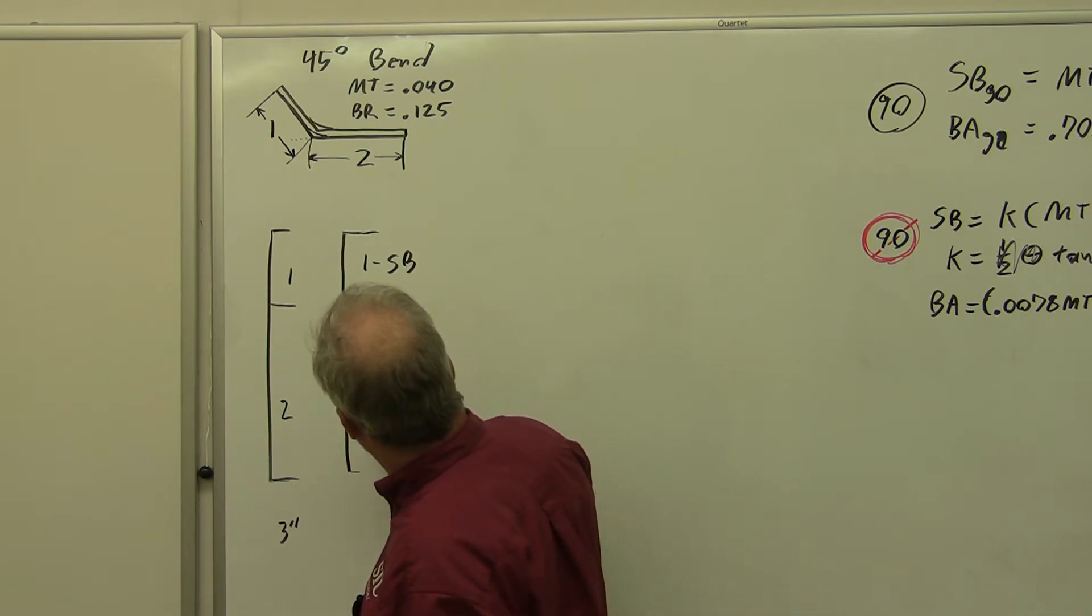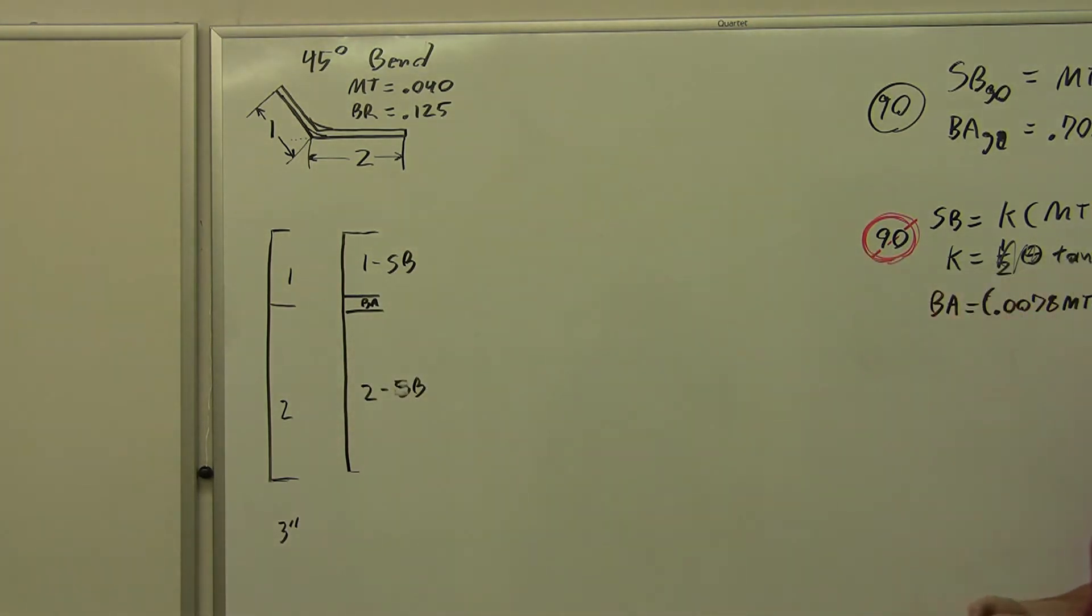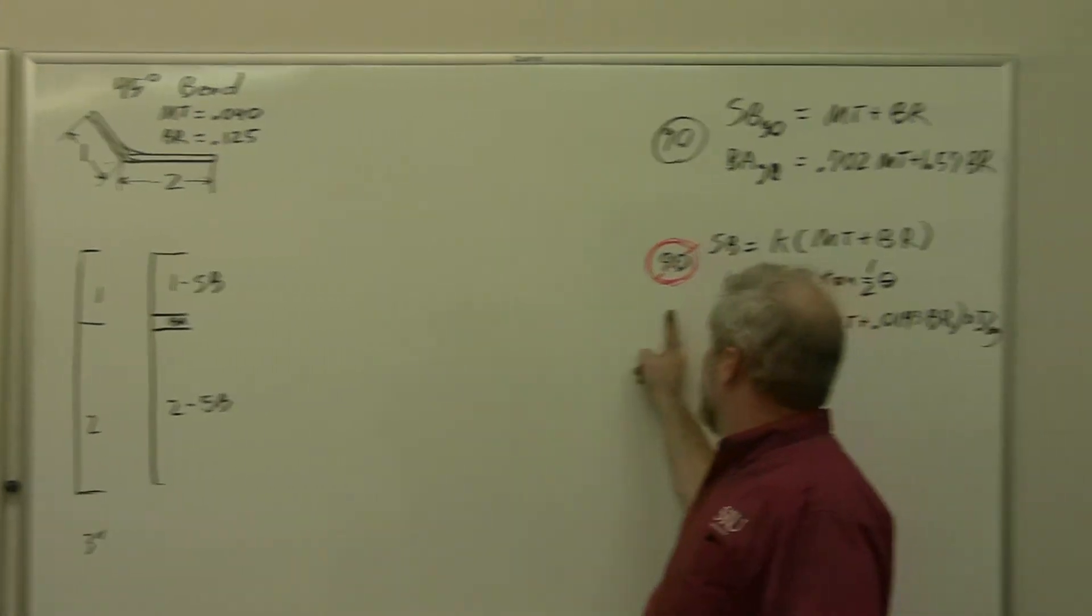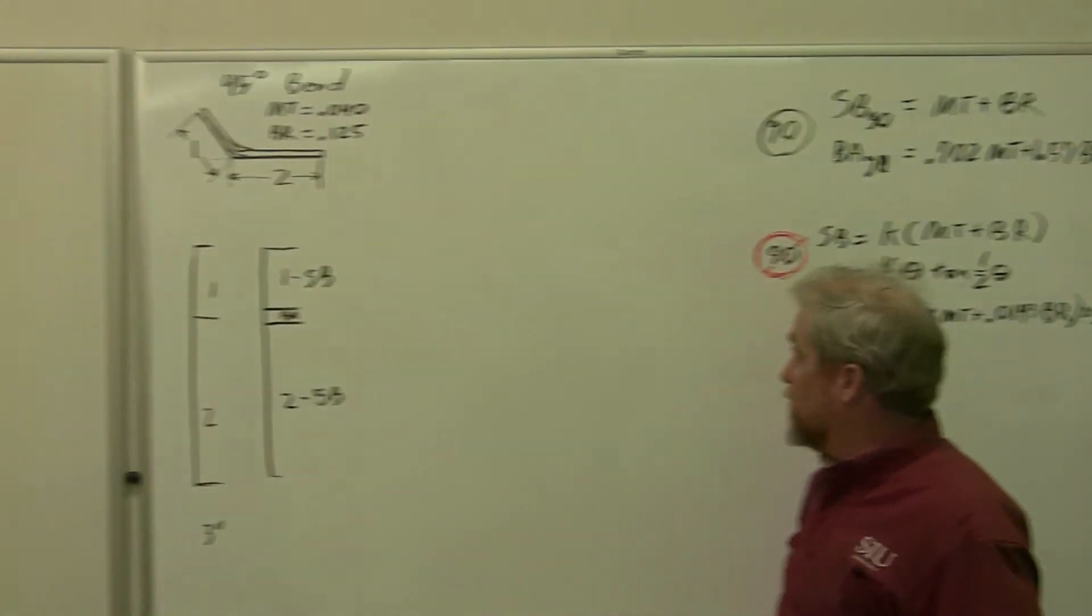Once we get that done, sorry about my messy writing, we should be able to figure out what that is. This is the same as our first example, except we have to use this formula and our numbers are a little bit different.